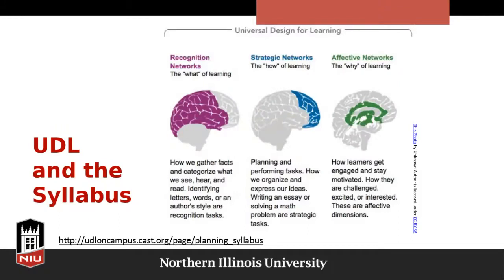Here's the UDL connection for the syllabus. There are three different components of universal design for learning: recognition networks, strategic networks, and affective networks. Recognition networks are the 'what' of learning — how we gather facts and categorize what we see, hear, and read. Strategic networks are the 'how' — planning and performing tasks, how we organize and express our ideas, like writing an essay or solving a math problem. Affective networks are the 'why' — how learners get engaged and stay motivated, how they're challenged, excited, and interested.